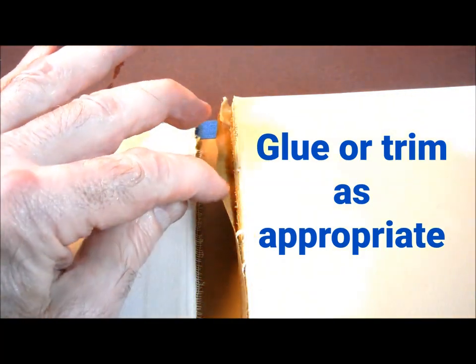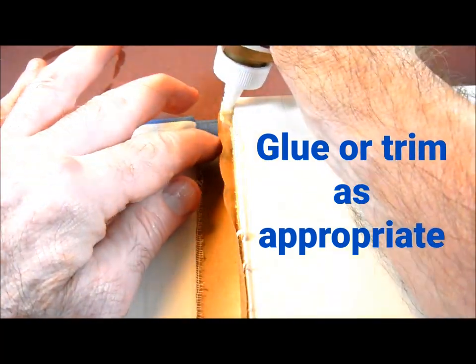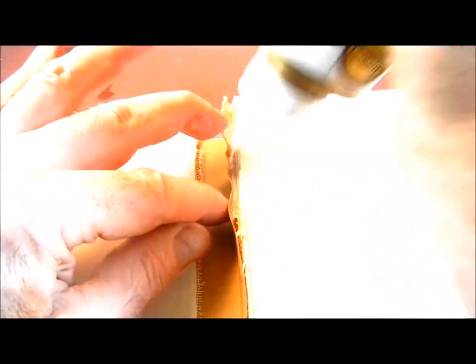Instead of removing loose areas of paper, you may choose to glue before attaching the book block to the cover. Overhanging areas should be trimmed off.